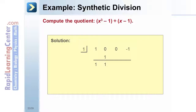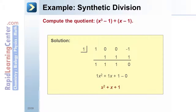4. Add the values in the latest column: 0 plus 1 is 1. 5. Repeat the process from step 3 with the rest of the columns to get a bottom row of 1, 1, 1, and 0. 6. The numbers on the bottom row represent the coefficients of your quotient and your remainder. Write out the answer working right to left from the remainder to the highest degree. The final quotient is x squared plus x plus 1. There was no remainder.